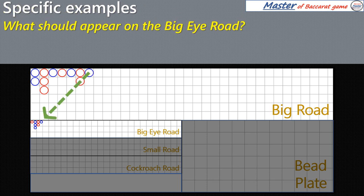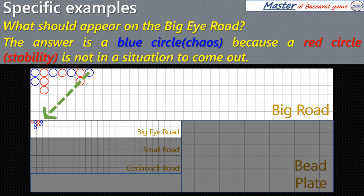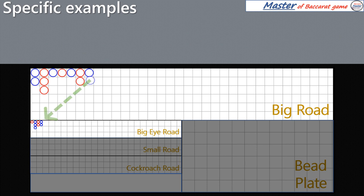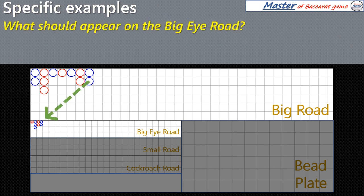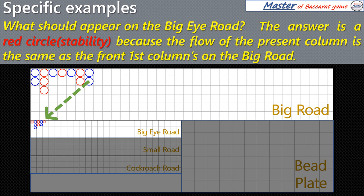What should appear on the Big Eye Road? The answer is a red circle, because the flow of the present column is the same as the front first column's on the Big Road.